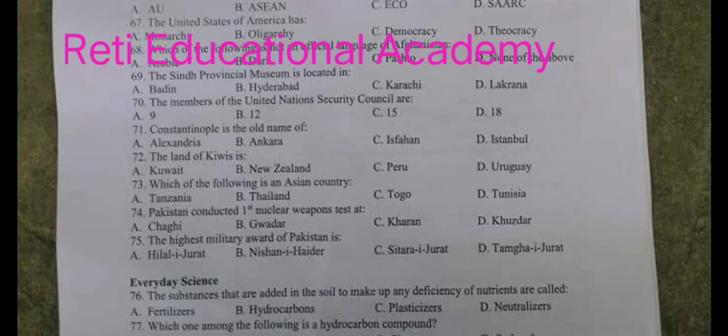Question number 75. The highest military award of Pakistan is? A. Hilal-e-Jurat, B. Nishan-e-Hadar, C. Sitara-e-Jurat, D. Tamgha-e-Jurat. The right option is B. Nishan-e-Hadar.